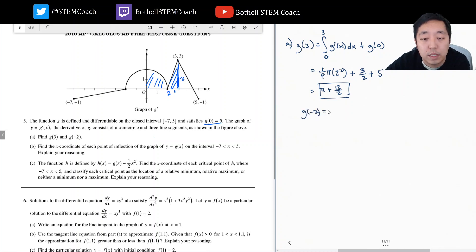g of negative two is the same idea: integral from zero to negative two of g prime of x dx plus g of zero. Now I'm doing the area between zero and negative two. This area is generally positive, but because I'm integrating from right to left, the area is negative. So this integral is negative pi plus five.